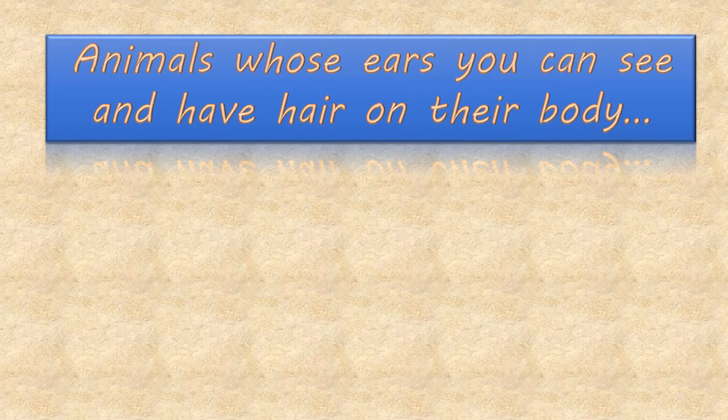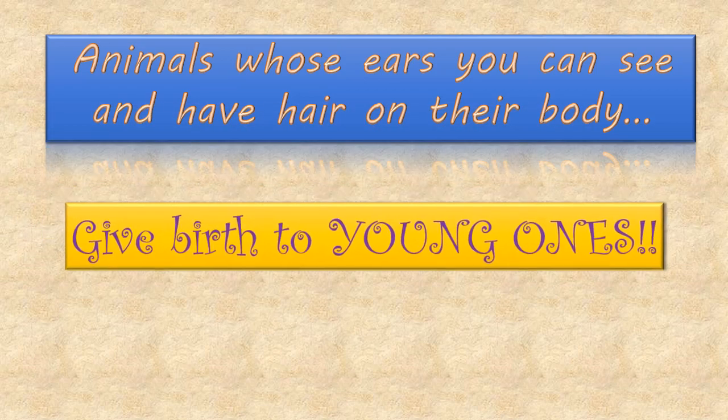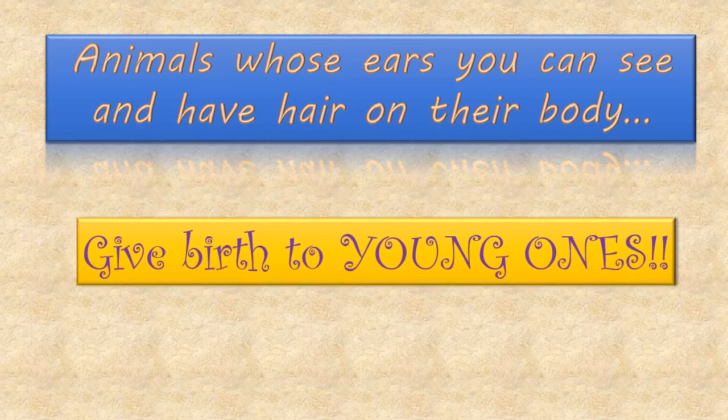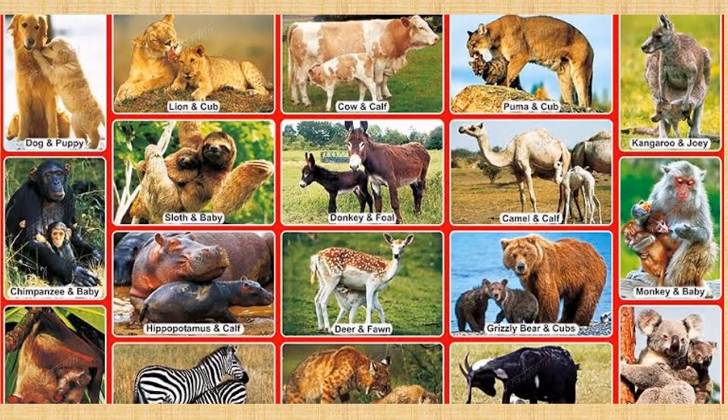Animals whose ears you can see and have hair on their body give birth to young ones. These animals which give birth to young ones are called viviparous animals.